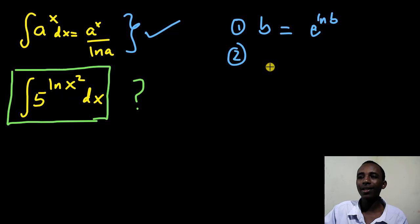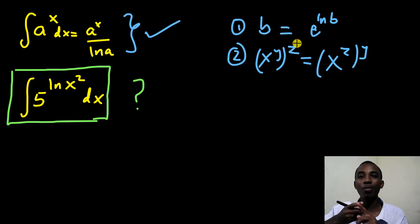The second thing here is that if I have two numbers, like a number with two powers, like x to power y to power z, this is the same as x to power z to power y. So I can interchange the two powers. So that's good. Now let's continue.